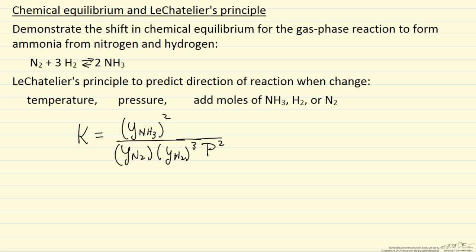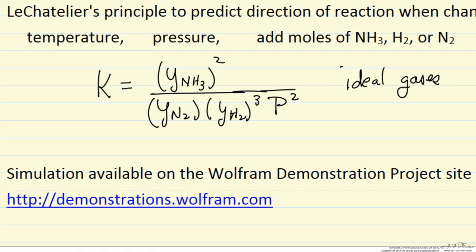We can get the values, and that's what we'll use in this simulation. We're assuming ideal gases, and that's an approximation which gets worse as we go to higher pressures, but to demonstrate behavior we'll use ideal gases even at high pressure. So the simulation is available on the Wolfram demonstration project site. You can search under chemical equilibrium to find it.